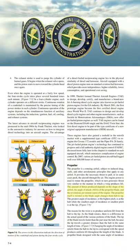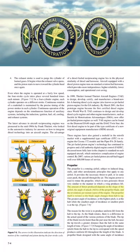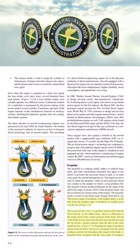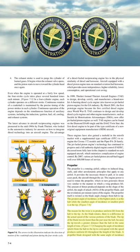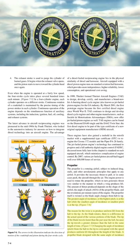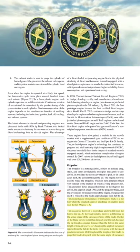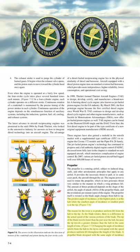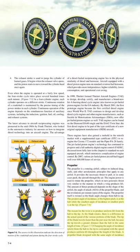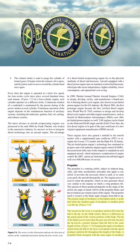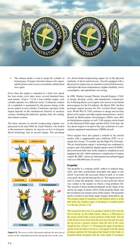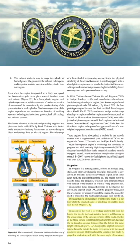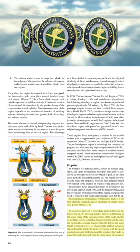The propeller itself is twisted so the blade angle changes from hub to tip. The greatest angle of incidence, or highest pitch, is at the hub while the smallest pitch is at the tip. The reason for the twist is to produce uniform lift from hub to tip. As the blade rotates, the tip travels faster than the part near the hub because the tip travels a greater distance in the same length of time. Changing the angle of incidence from hub to tip to correspond with the speed produces uniform lift throughout the length of the blade.